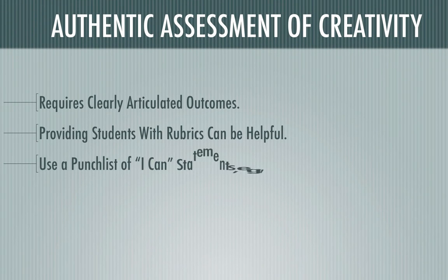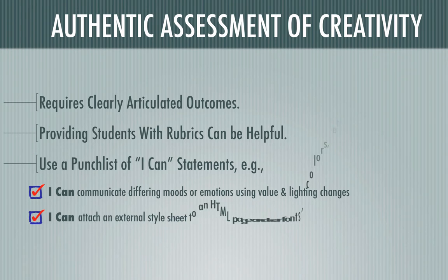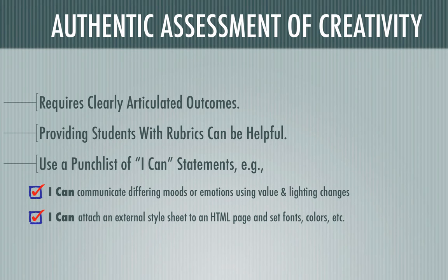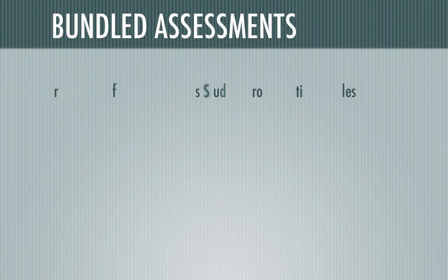Authentic assessment of creativity requires clearly articulated outcomes. Providing students with rubrics can be helpful, or you can use a punch list of 'I can' statements — or both. 'I can' statements are things like: 'I can communicate differing moods or emotions using value and lighting changes,' or 'I can attach an external style sheet to an HTML page and set fonts and colors.' Useful stuff.